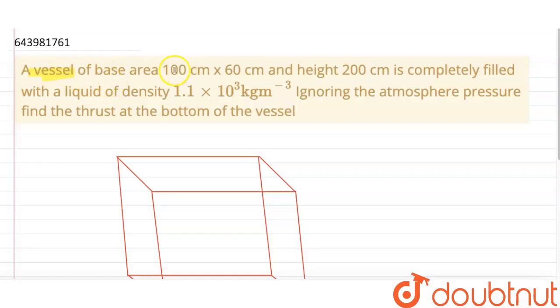A vessel of base area 100 centimeter by 60 centimeter and height 200 centimeter is filled with a liquid of density 1.1 × 10³ kg per meter cube. Ignoring atmospheric pressure, find thrust at the bottom of the vessel.